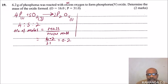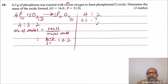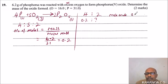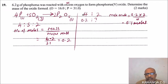Using the mole ratio, phosphorus to phosphorus oxide is 4 : 2. We have found 0.2 moles of phosphorus, so the moles of phosphorus oxide = (0.2 × 2) ÷ 4 = 0.1 moles. So 0.1 moles is the number of moles of phosphorus oxide.